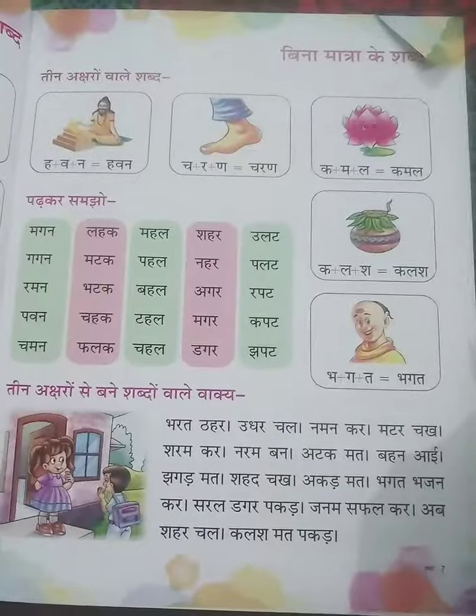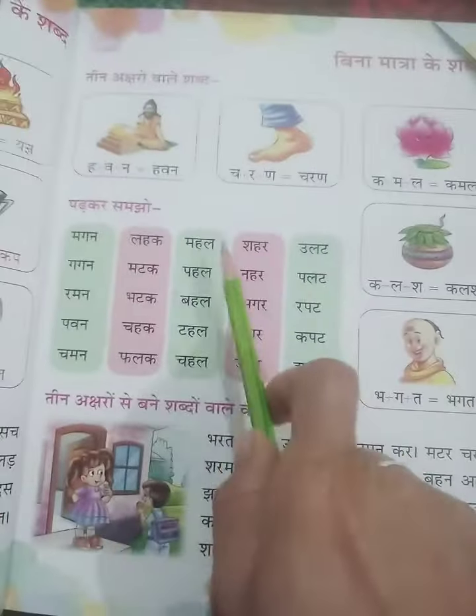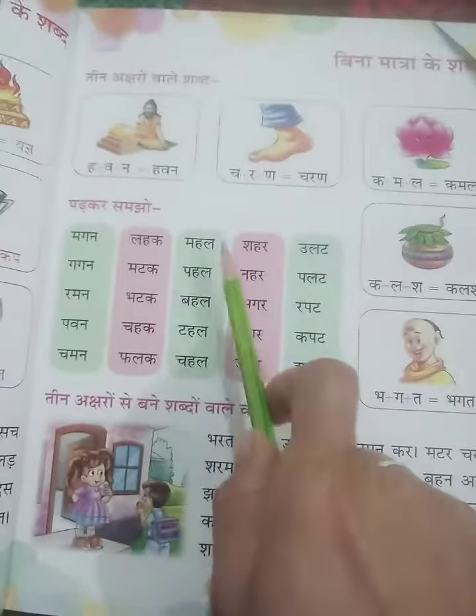I will teach you today Bina Matrake Shabd — 3 Akshar Waale Shabd. These are words made of 3 letters. 3 words.